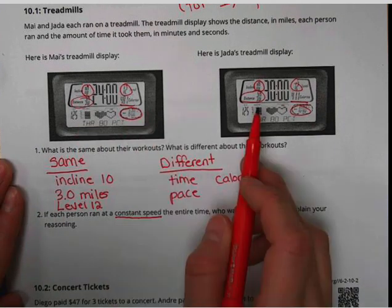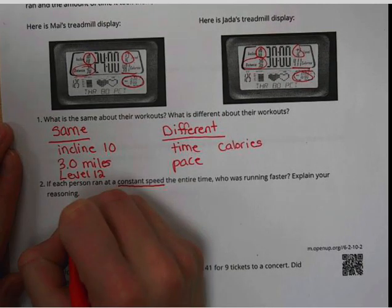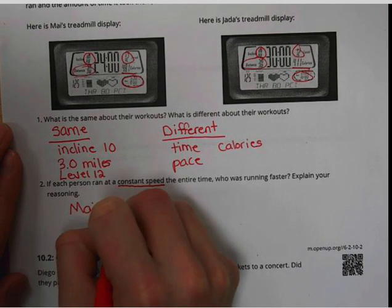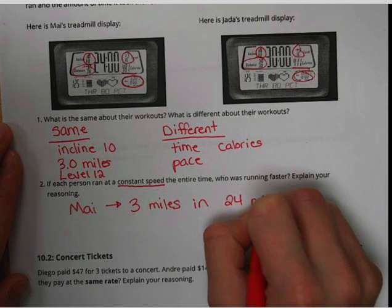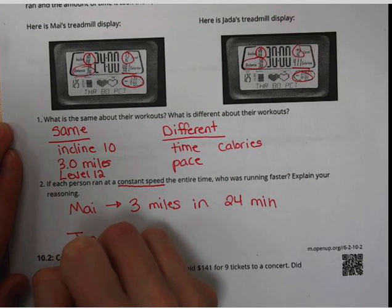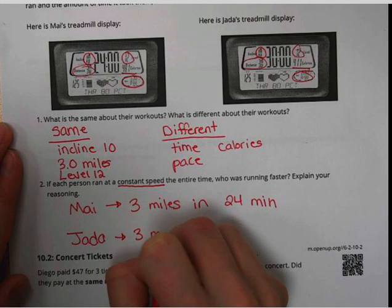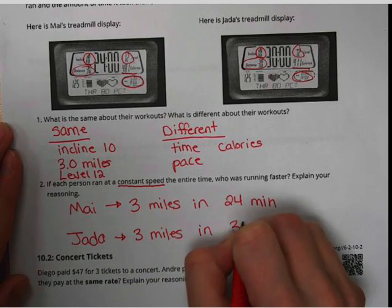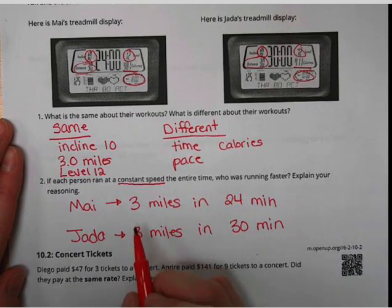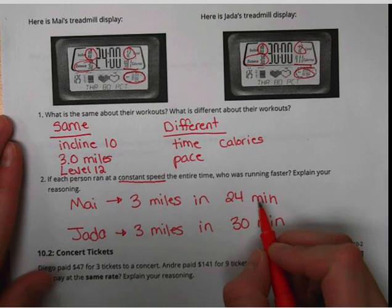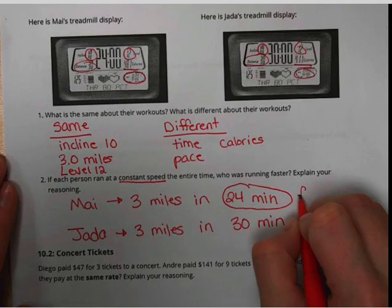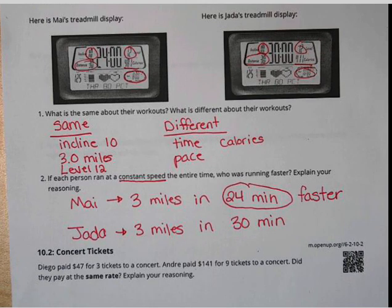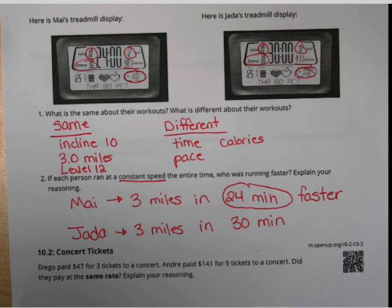Both of them ran three miles, so their distance is the same. I'm going to put Mai as three miles in 24 minutes, and Jada was three miles in 30 minutes. We can see that they have the same number of miles, so since these are equal, all we have to do is compare the time. 24 minutes is less, which means that is a faster time because she finished the race first. So Mai was the faster runner because she has a lower number of minutes that it took her, so she ran faster.